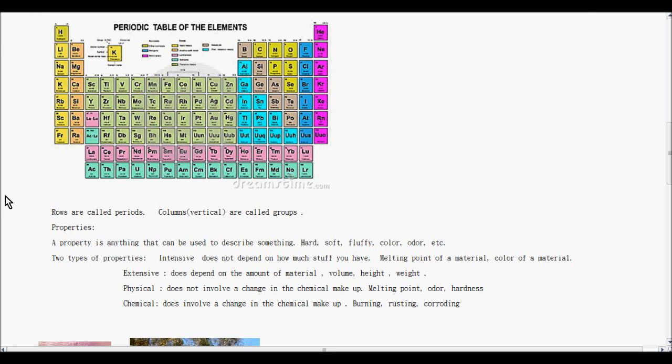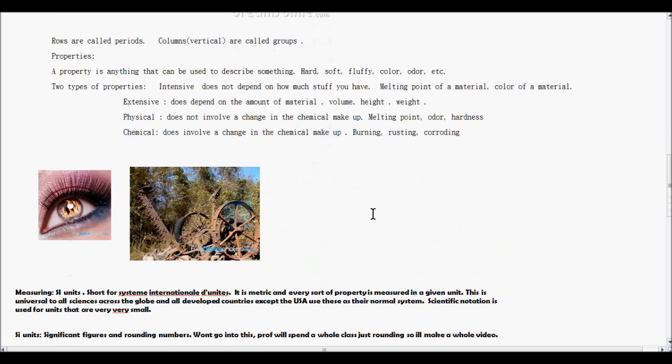Another big term in chemistry is properties. A property is anything that can be used to describe something. So if a substance is hard, soft, dogs are fluffy, the color of things, what they smell like, those are all properties. And there's different types of properties. There's really two major types that you're going to talk about. Intensive properties, which does not depend on how much stuff you have. So like the melting point of steel is an intensive property. The color of a material, is it shiny, is it dull? Those are all intensive. It doesn't matter how much steel you have, steel is going to have the same properties. Extensive does depend on the amount of the material. Volume, height, weight, like a cardboard box, like how big is it, how much cardboard is in it. Those are extensive properties.